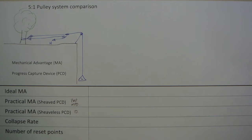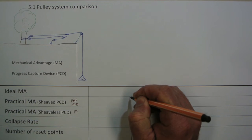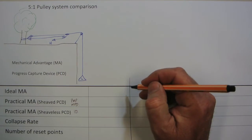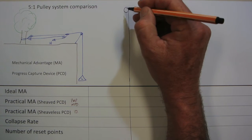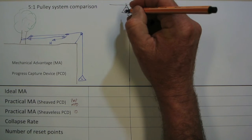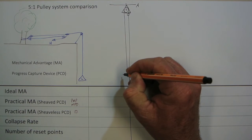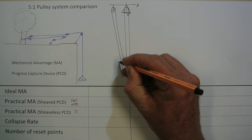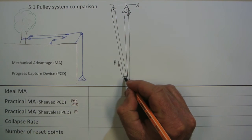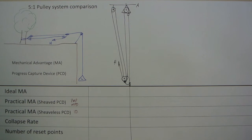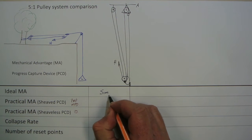Let's start by drawing some mechanical advantage systems. The first one is a simple MA. We've got a load that comes back over the edge — we're going to treat this line as our edge. The rope comes up through some sort of progress capture device which is anchored, then back down towards the edge, back up again to a second anchored pulley, back down towards the edge, and we've got a haul — attaching a pulley to the line with some sort of haul cam. So that's our simple 5 to 1, with the load at the bottom and the haul system at the top.